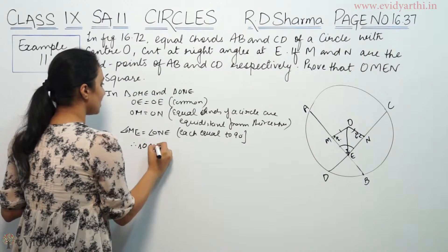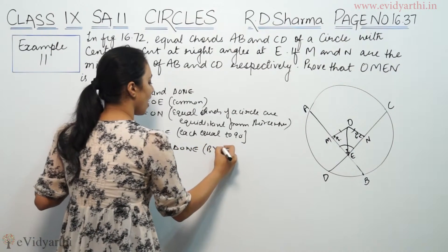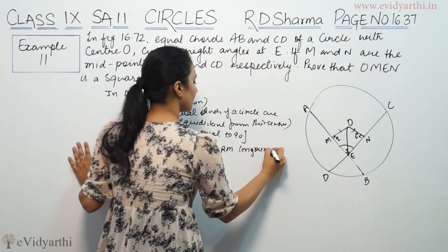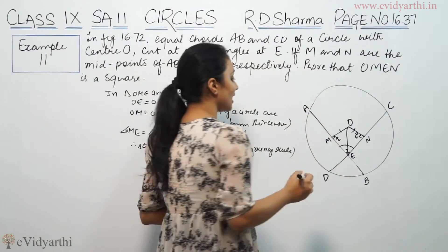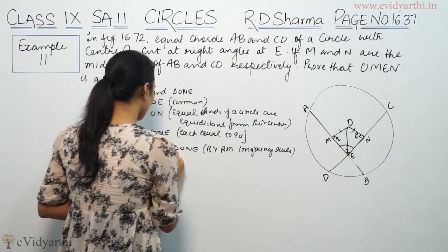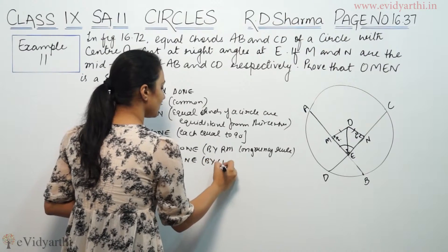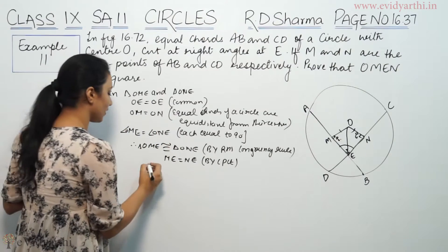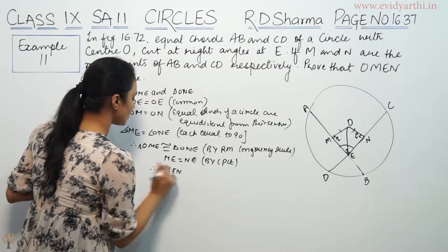Triangle OME is congruent to triangle ONE by RHS. By CPCT, ME is equal to NE. When both sides are equal and the angle at E is 90 degrees, therefore OMEN is a square.